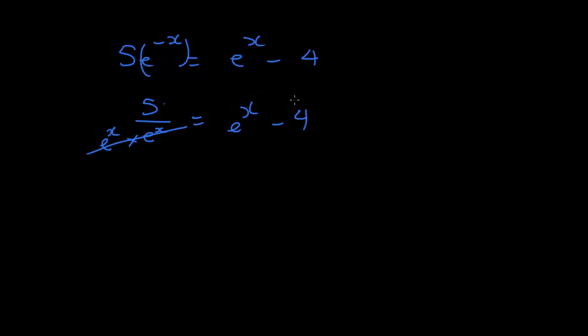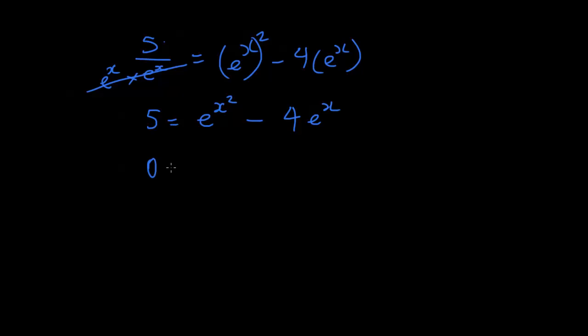Okay. Perfect. Now, that cancels out, and then you get e to the power of x squared, and you get minus 4e to the power of x. Perfect. So you end up with something like this. 5 equals e to the power of x squared minus 4e to the power of x. Now, you can move the 5 over, so it becomes 0 equals e to the power of x squared minus 4e to the power of x, and minus 5. Because remember, this is a plus here. Take it over to the other side, and you get a minus. Perfect.